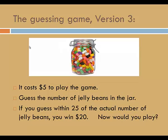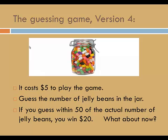How about a third version? It still costs $5 to play. You guess the number of jelly beans in the jar. This time, if you guess within 25 of the actual number of jelly beans, you win $20. How about now? Consider version 4. It's still $5 to play. You guess the number of jelly beans in the jar. If you guess within 50 of the actual number of jelly beans, you win $20.